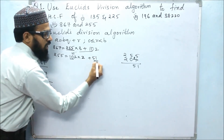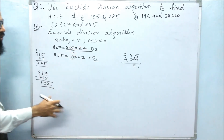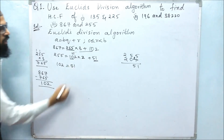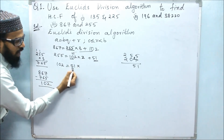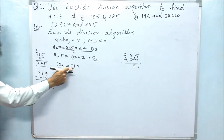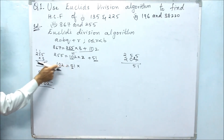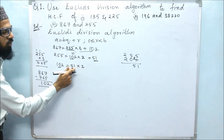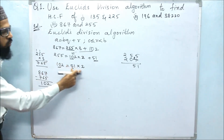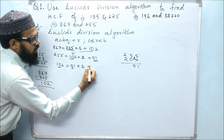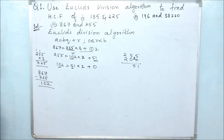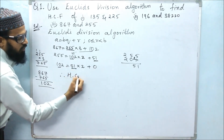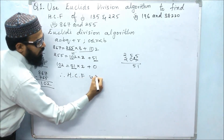The remainder is not equal to 0, so the procedure continues. Now 102 comes in place of A and 51 comes in place of B. In the 5 table, 5 times 2 is 10, so we multiply 51 by 2. 2 times 1 is 2, 2 times 5 is 10, giving 102. Subtracting 102 minus 102 is 0. The remainder is 0, so the procedure stops. Therefore, the HCF is 51.